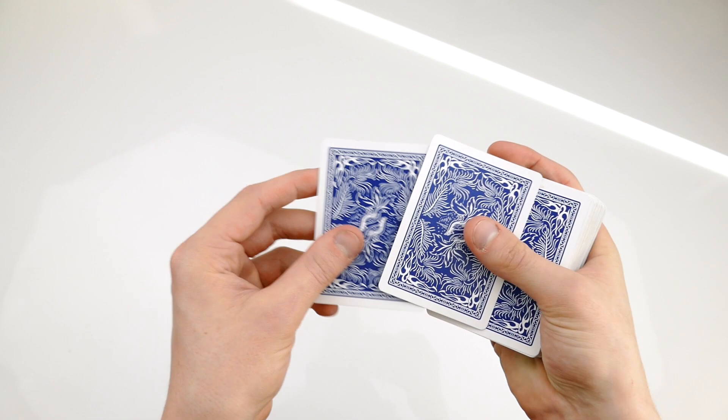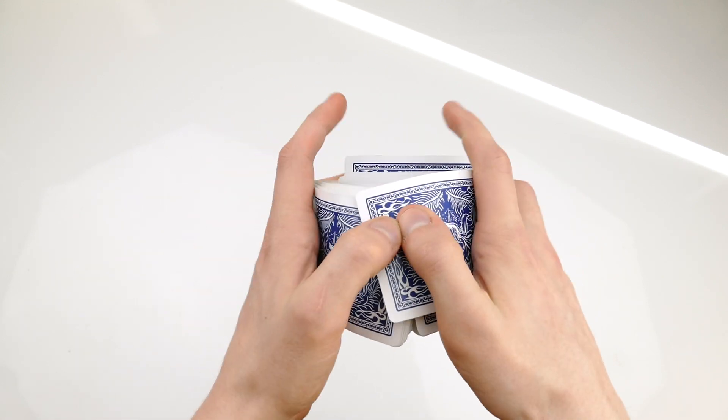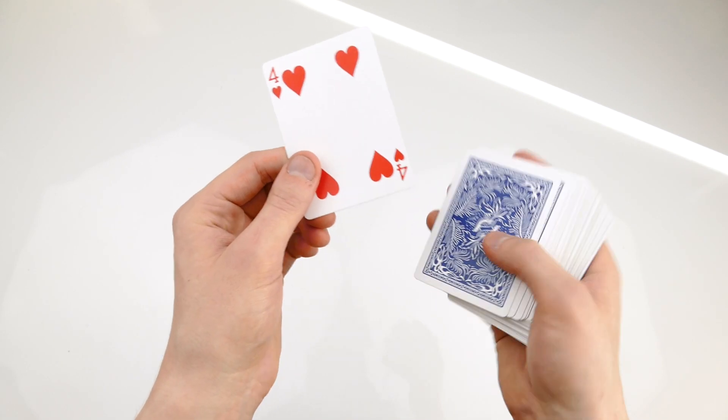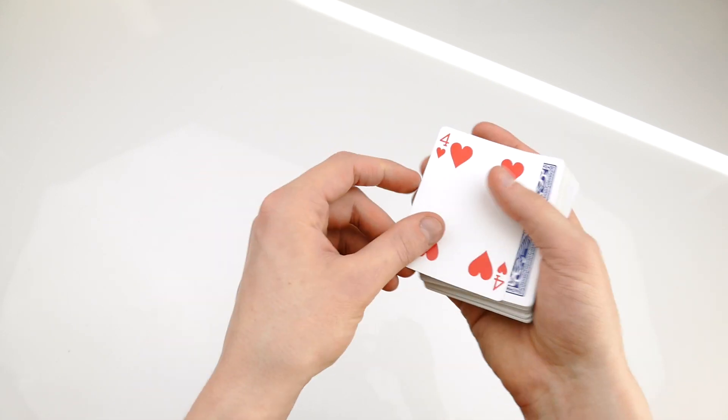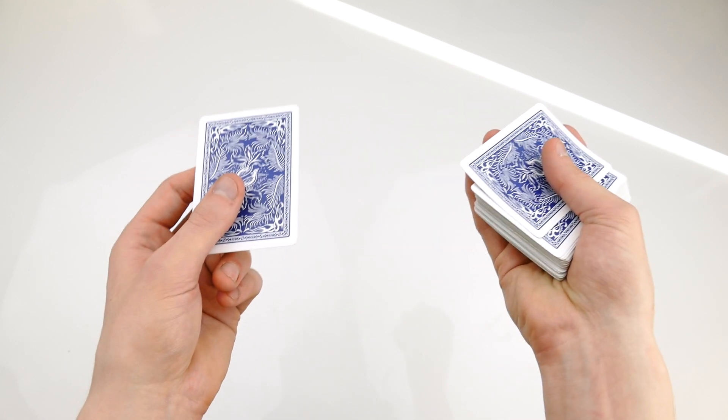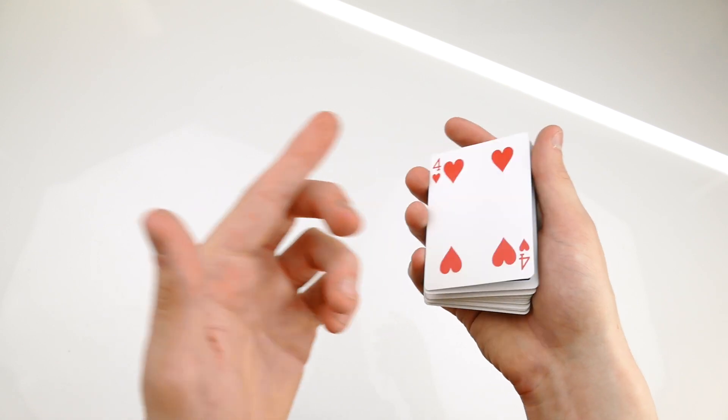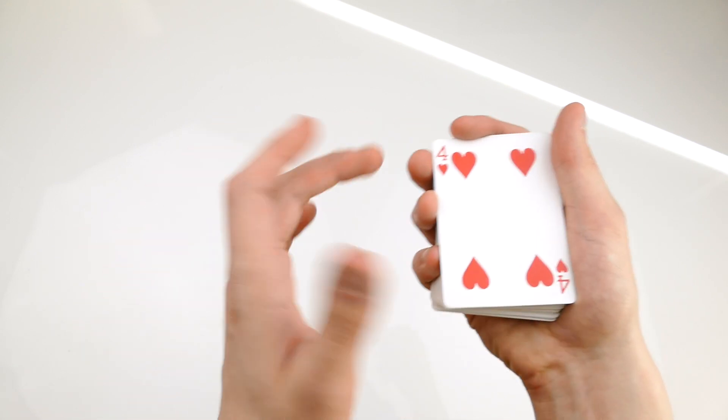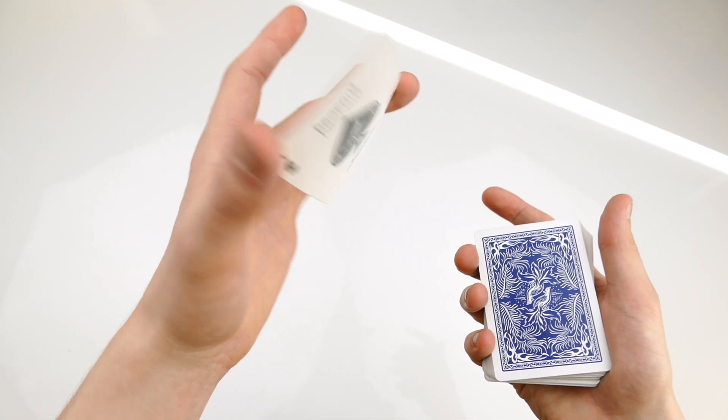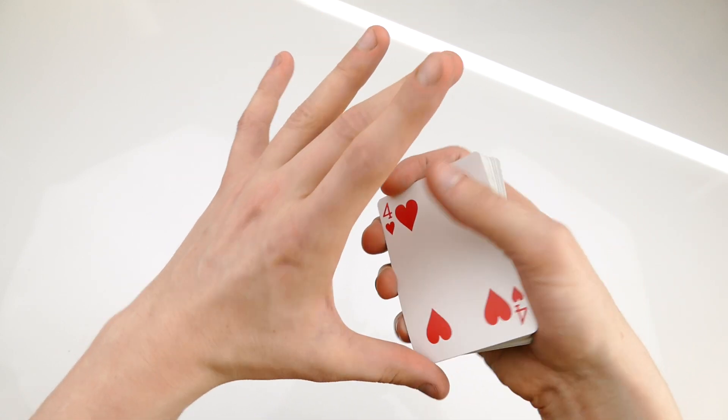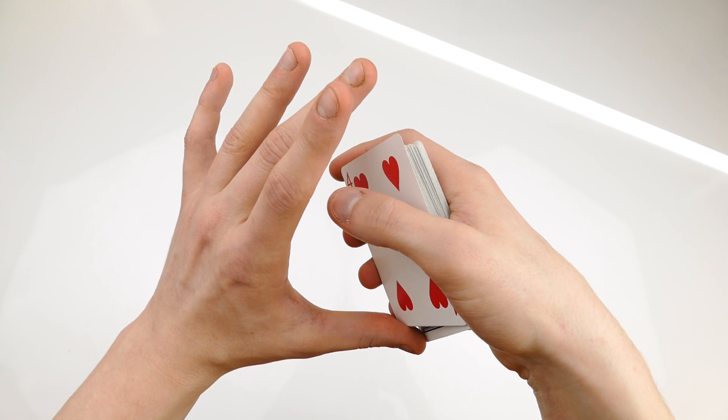So you control the card second from the top, or you can control it on top and then you can riffle one card on top like that. Then you simply take the top card which is not the selection and you're going to get a break below the selected card. Take this card, turn it over, square it up as one and pick up a double.